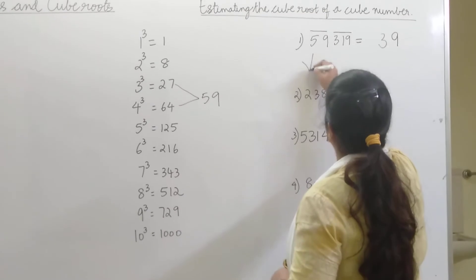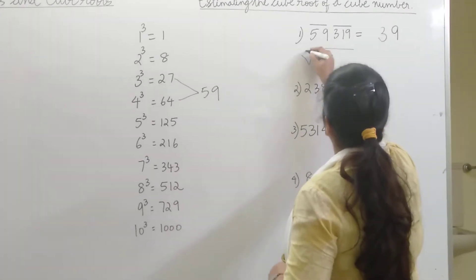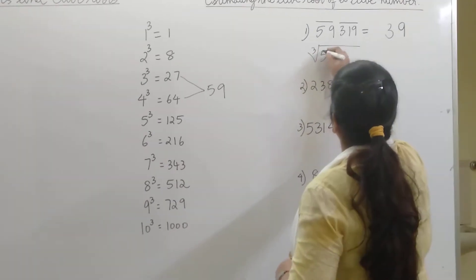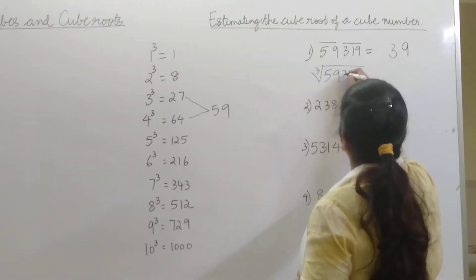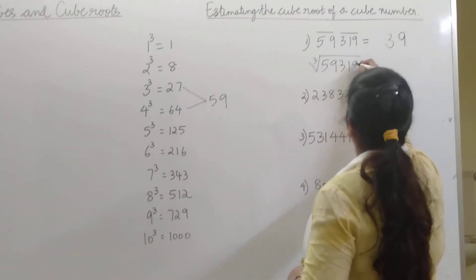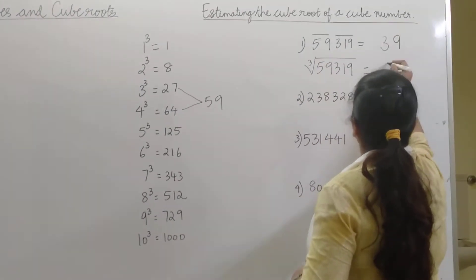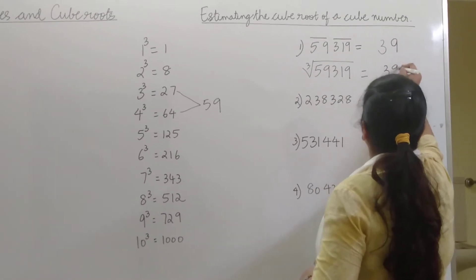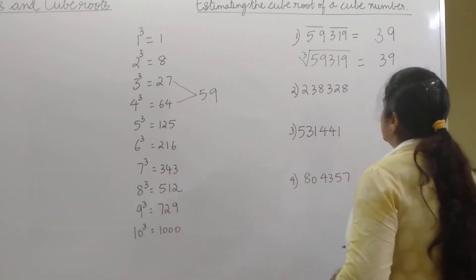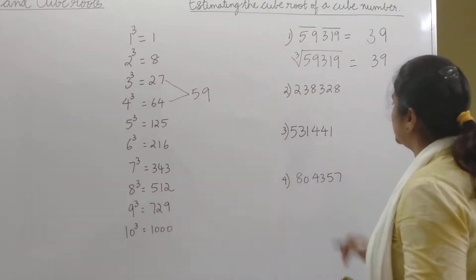So the cube root of 59,319 is 39. Let's try another one.